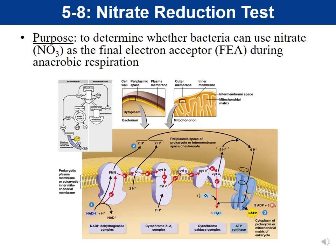For the nitrate reduction test, you want to understand the purpose: to determine whether bacteria can use nitrate, NO3-, as the final electron acceptor during anaerobic respiration. This is not aerobic — aerobic uses O2 as the final electron acceptor. In this test, we're determining if nitrate can take that place during anaerobic respiration. You also want to know that this occurs in the electron transport chain.